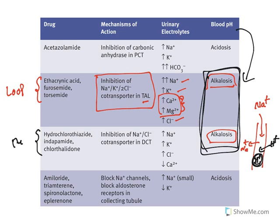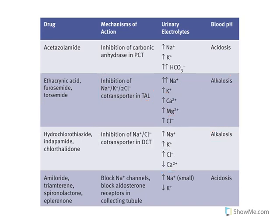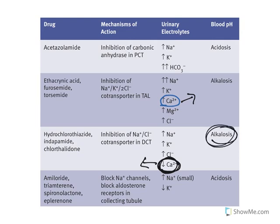Thiazide diuretics inhibit the sodium-chloride co-transporter at the distal convoluted tubule, causing sodium, potassium, and chloride loss. Importantly, unlike loop diuretics, thiazides retain calcium in the body — this is the key difference. Thiazides are actually used to treat calcium-related conditions like osteoporosis because they decrease calcium excretion. Thiazides also cause alkalosis.